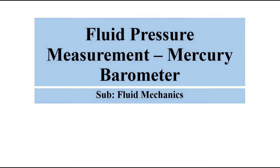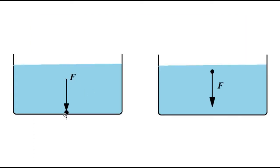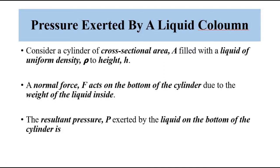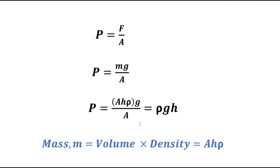That instrument is the mercury barometer. The whole concept of the mercury barometer is based on the pressure exerted by liquids. Liquids at rest exert a perpendicular force on the surface in contact, whether it is a solid surface or a liquid layer below it, and that pressure is simply force divided by area. For a liquid column, this pressure is given by the expression rho*g*h, which we have derived and which will come in handy.